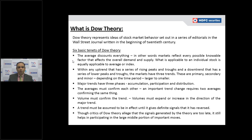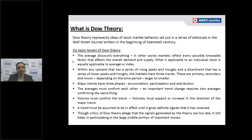Major trends have three phases: accumulation, participation, and distribution. At the lower level when the stock forms a bottom — irrespective of whether it's a 5-minute, 15-minute, daily, weekly, or yearly chart — at the lower level once the stock forms a bottom, that is the accumulation phase. Once it breaks out from the accumulation phase it enters the participation phase. At the higher level when the stock forms a higher top it shifts into a distribution phase, where the stock enters a corrective mode and shows a decline.